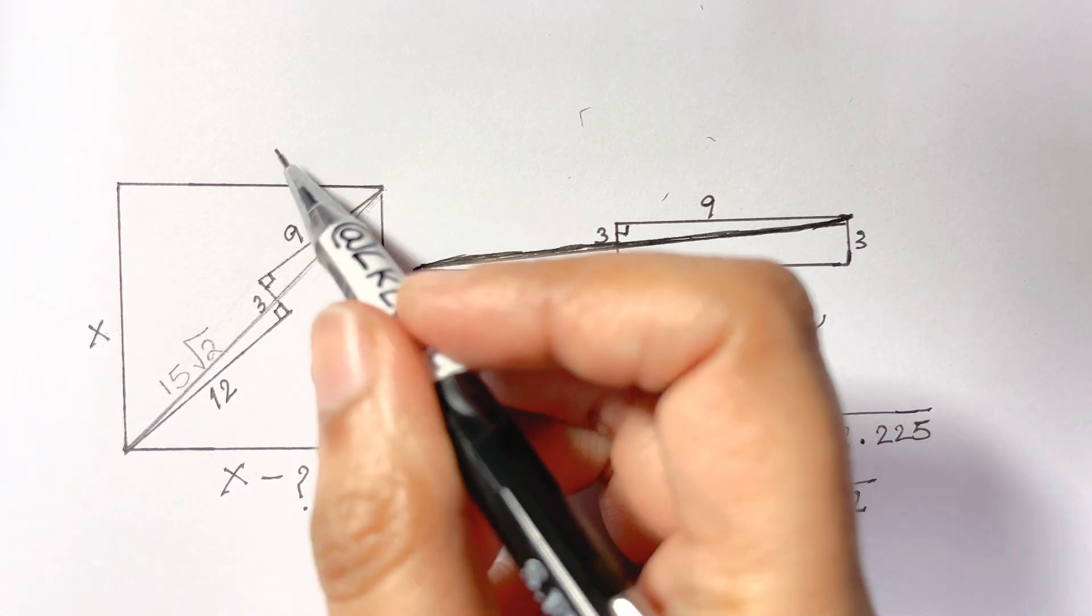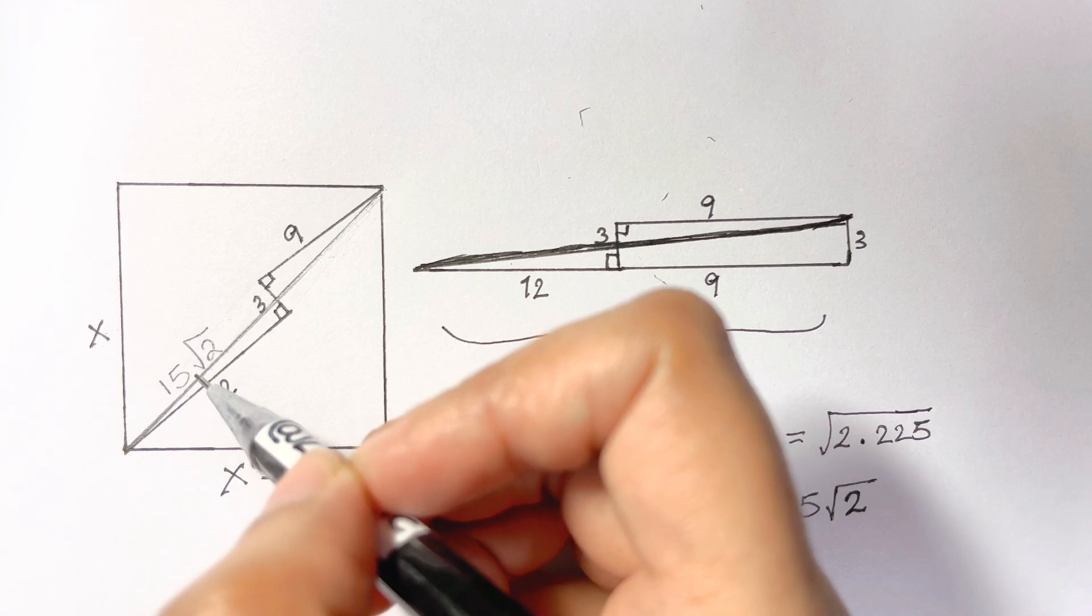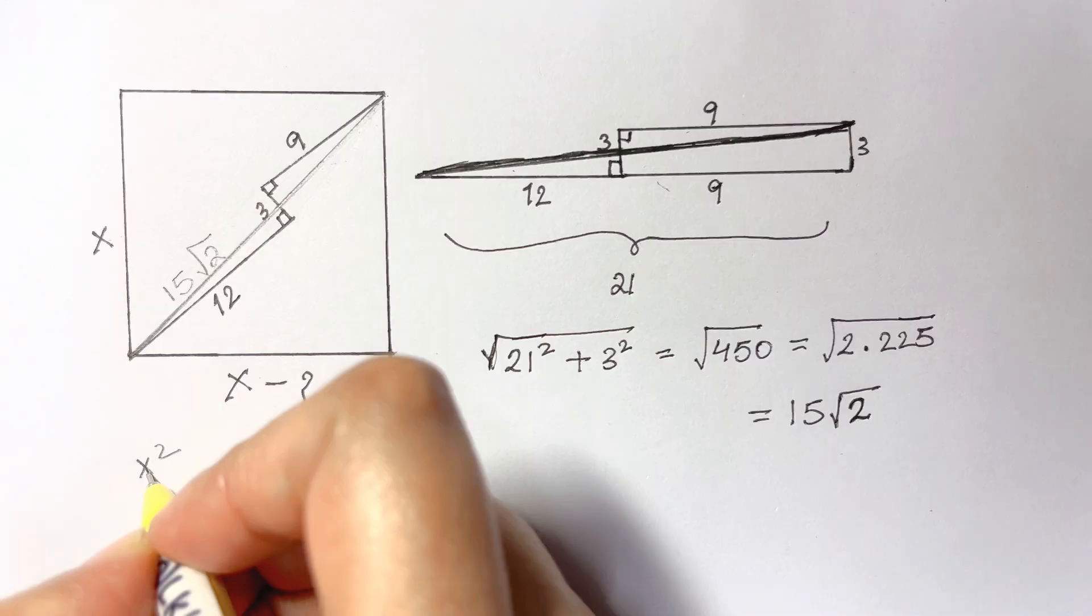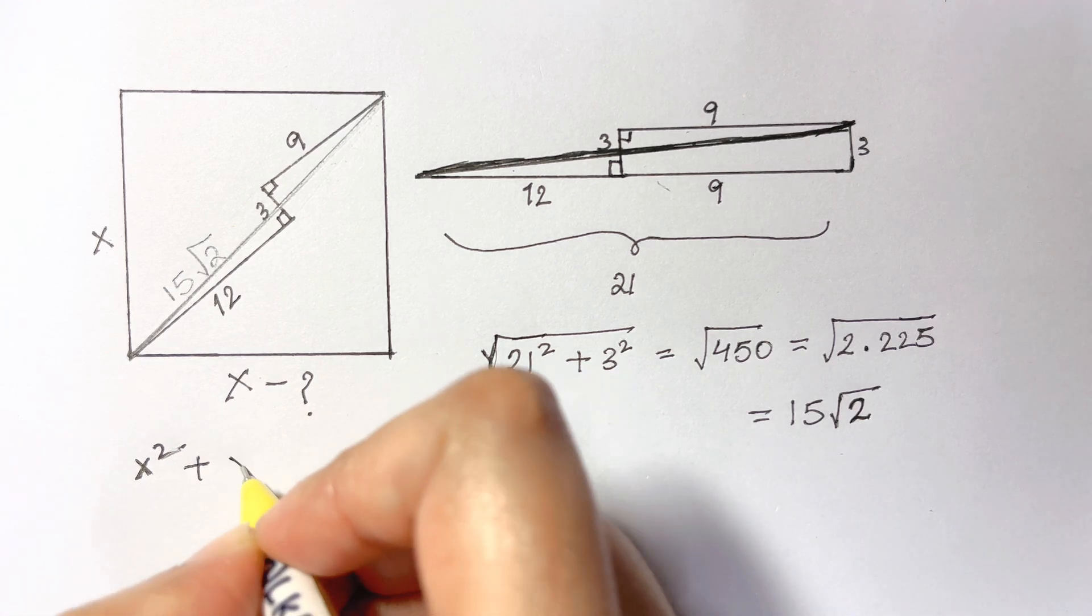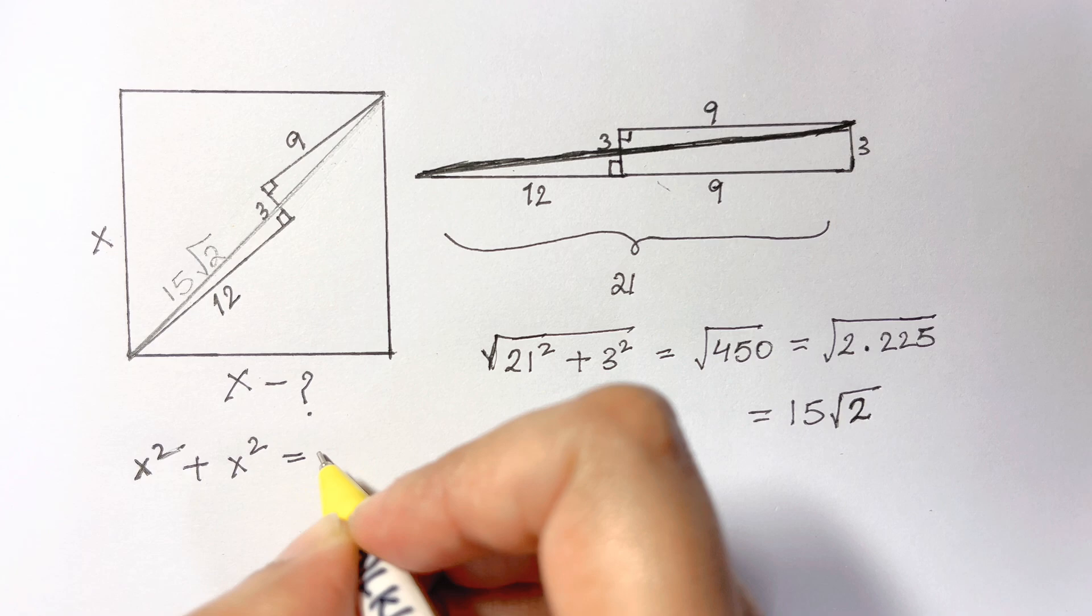So x squared plus x squared is equal to the square of the hypotenuse. Let's write it down: x² + x² is equal to 15√2 whole squared.